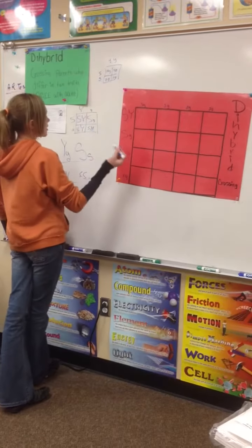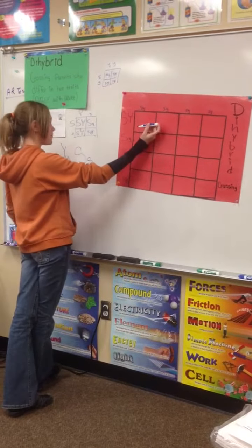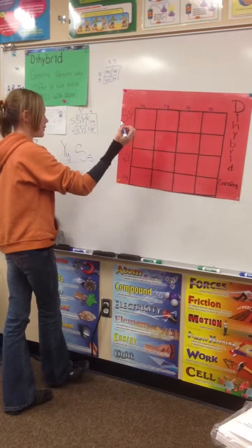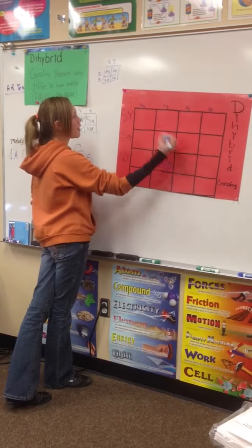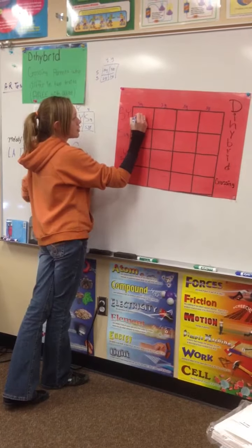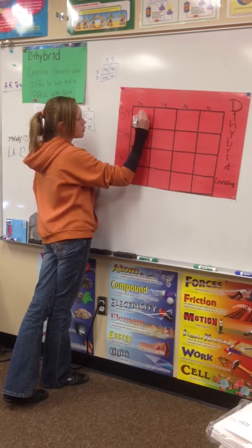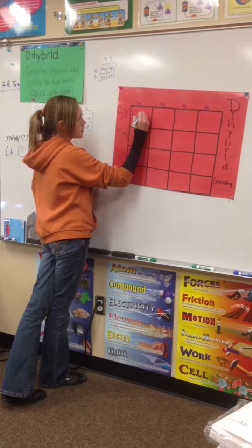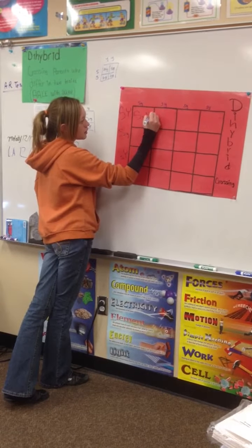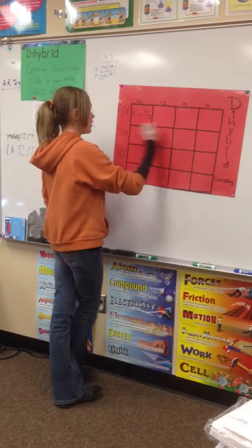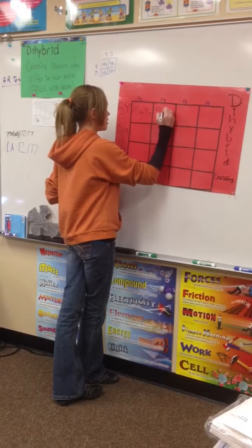Okay, now we are going to do the same thing as we did for the monohybrid Punnett square. We're going to cross multiply all of these. So the first line will be big S, little s, big Y, little y. And it goes throughout all of the squares.